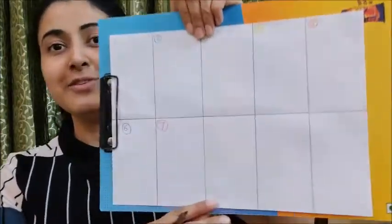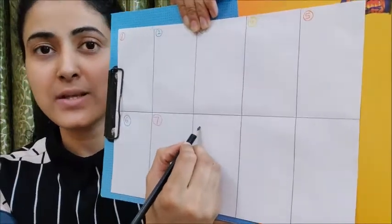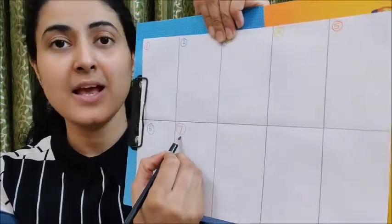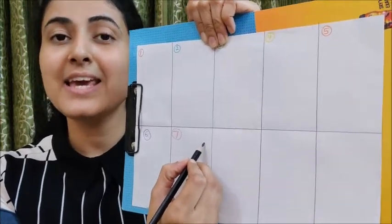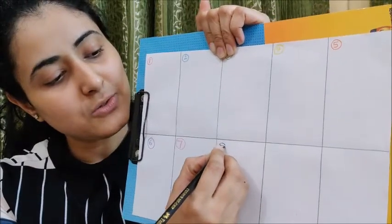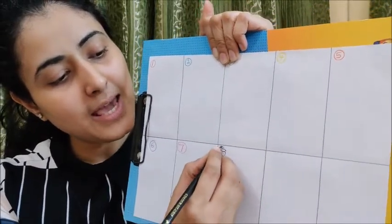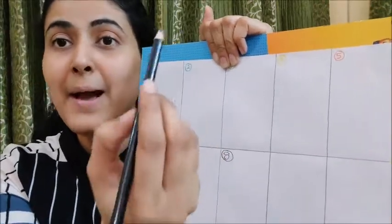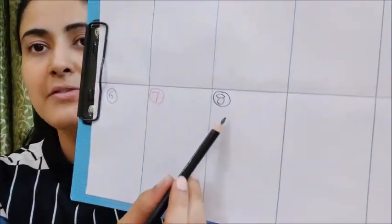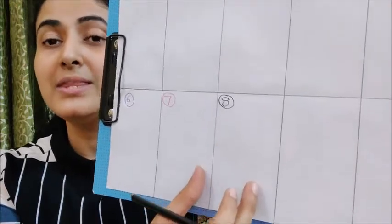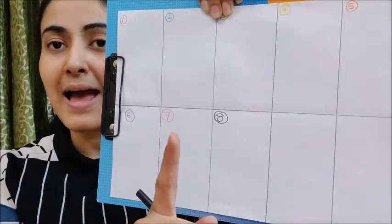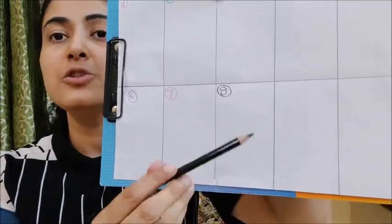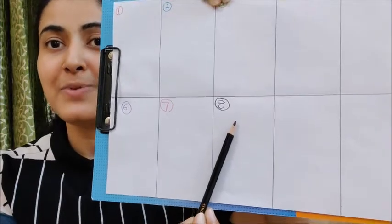And then on this sheet, you will write in this box, number 8. Yesterday we had written 7, so what comes after 7 children? 8. So here, I am going to write number 8 with my black color pencil. I have written number 8. Now in this box only, you will draw one object which is black in color and you will draw it with your black color pencil.